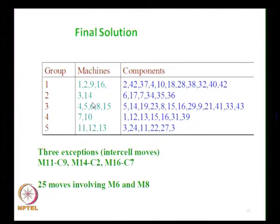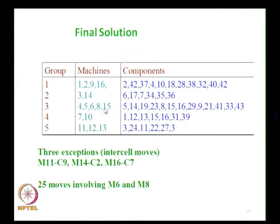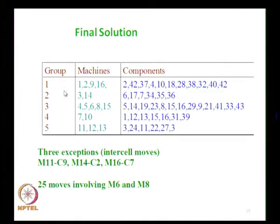Now we have 6 component families but the machine assignment rule gives only 5 machine groups. We do not treat this as a solution. We proceed again by applying the part assignment rule to these 5 machine groups. In the next iteration we get an equal number of machine groups and part groups — 5 each — with 25 intracell moves. When we reapply the machine assignment rule, the same machine groups repeat, so the algorithm terminates.